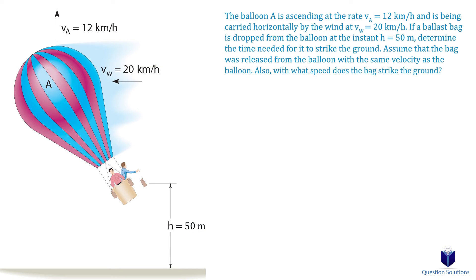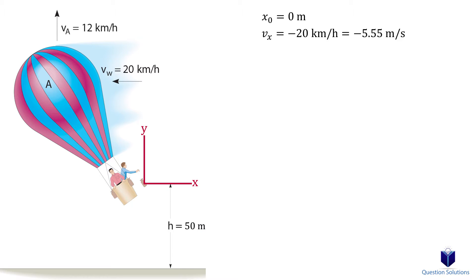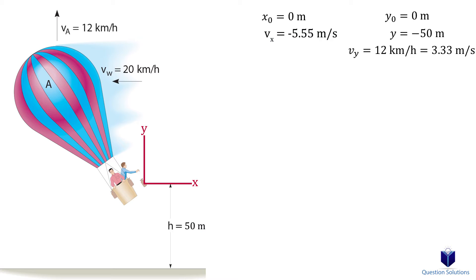Let's look at another example. In this question, a bag is dropped from a hot air balloon, and we have to figure out how long it took to fall and at what speed it strikes the ground. First, we will establish a coordinate system — I will place it at the location of the bag. The question says to assume the bag was released with the same velocity as the balloon. For the horizontal direction, the starting location is 0 meters, and the velocity in the horizontal direction is negative 20 kilometers per hour, which is negative 5.556 meters per second — it's negative because it's to the left. For the vertical direction, the bag starts at 0 meters and drops to negative 50 meters. We also have initial velocity going upwards: 12 kilometers per hour, which is 3.33 meters per second. Gravity is negative 9.81 meters per second squared.